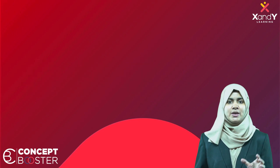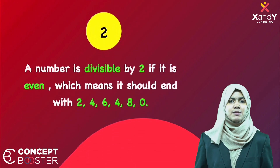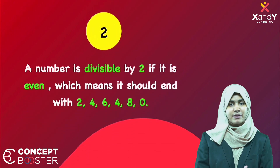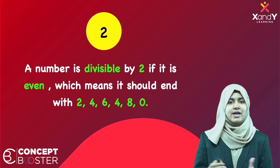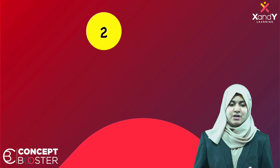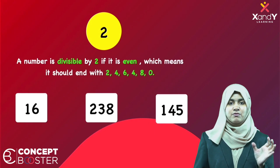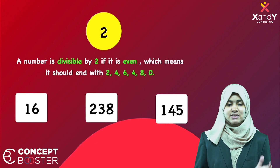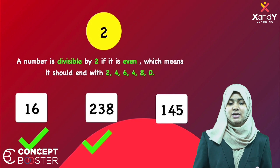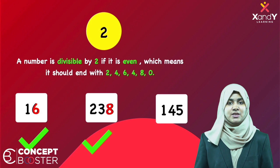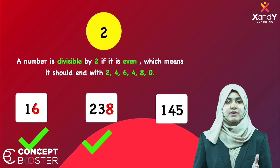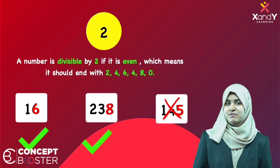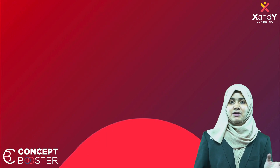First, the divisibility rule for 2. A number is divisible by 2 if it is an even number. For example, 16 and 238 are even numbers, so they are divisible by 2. Whereas 145 is an odd number, so it is not divisible by 2.